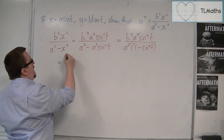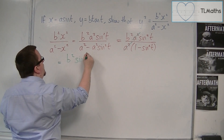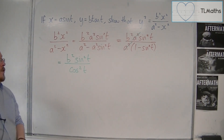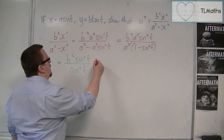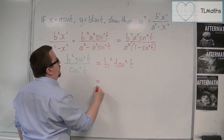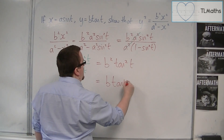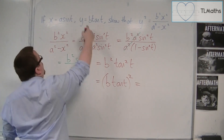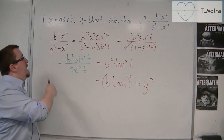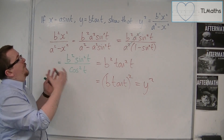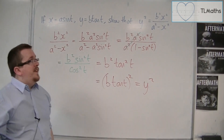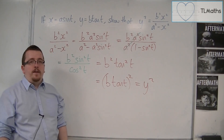We write this as b squared sine squared t over cos squared t. Sine squared over cos squared is tan squared, so this is b squared tan squared t, which equals b tan t all squared, which is y squared. This shows the right-hand side equals the left-hand side, confirming this is the correct Cartesian equation for the parametric equations.